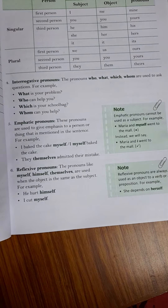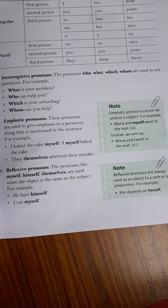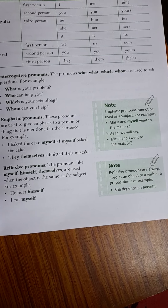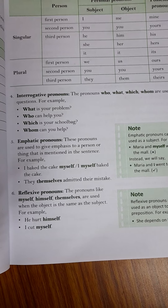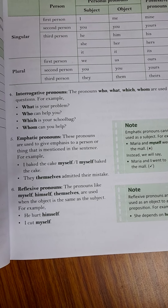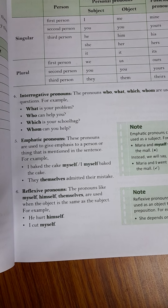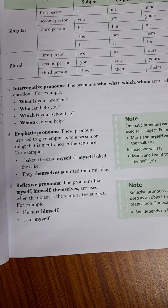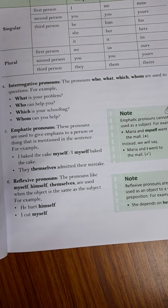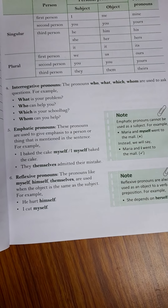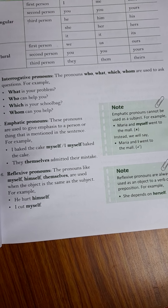Some of you wanted to know the difference between emphatic pronouns and reflexive pronouns — how to differentiate between them. It's very simple. Emphatic pronouns are where great emphasis is laid on a particular person or thing that is being talked about. For example: 'I baked the cake myself.'